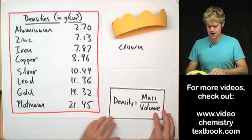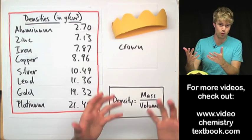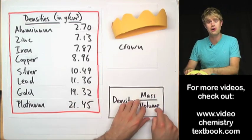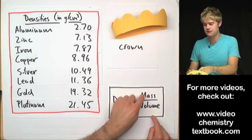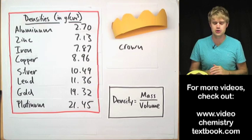So, in order to come up with this number for density, Archimedes has to measure the mass, how much the crown weighs, and the volume of the crown, how much space it takes up. Then he can divide the mass by the volume, get the density, and check to see if it's actually gold.